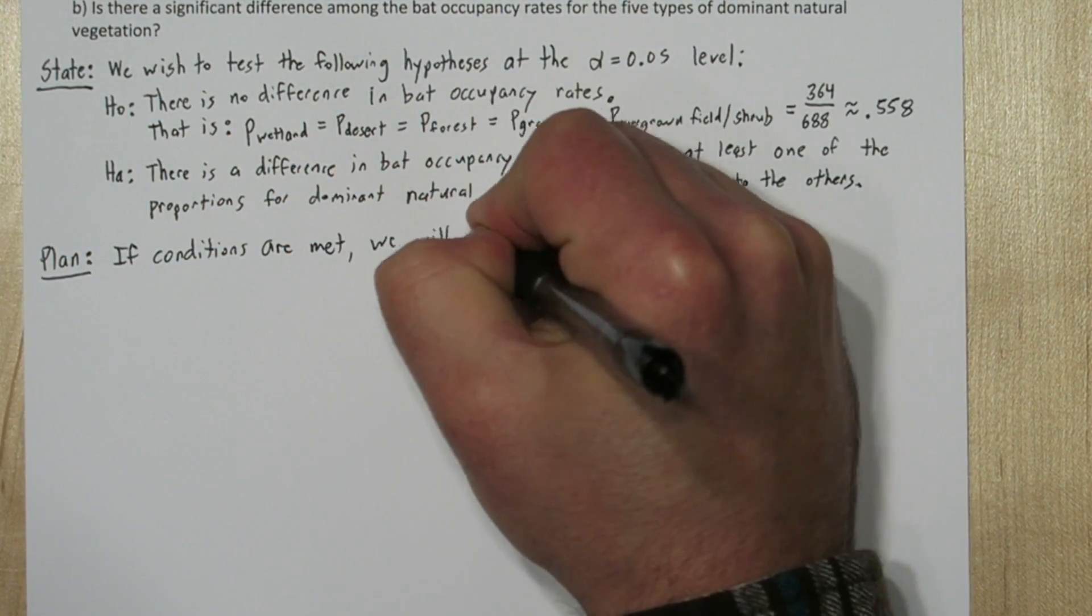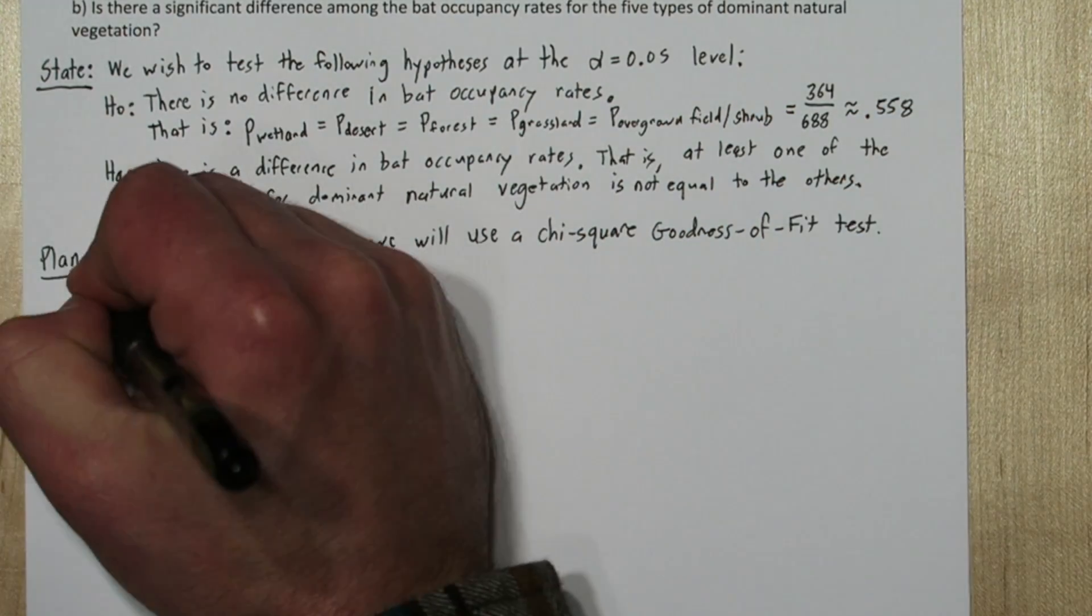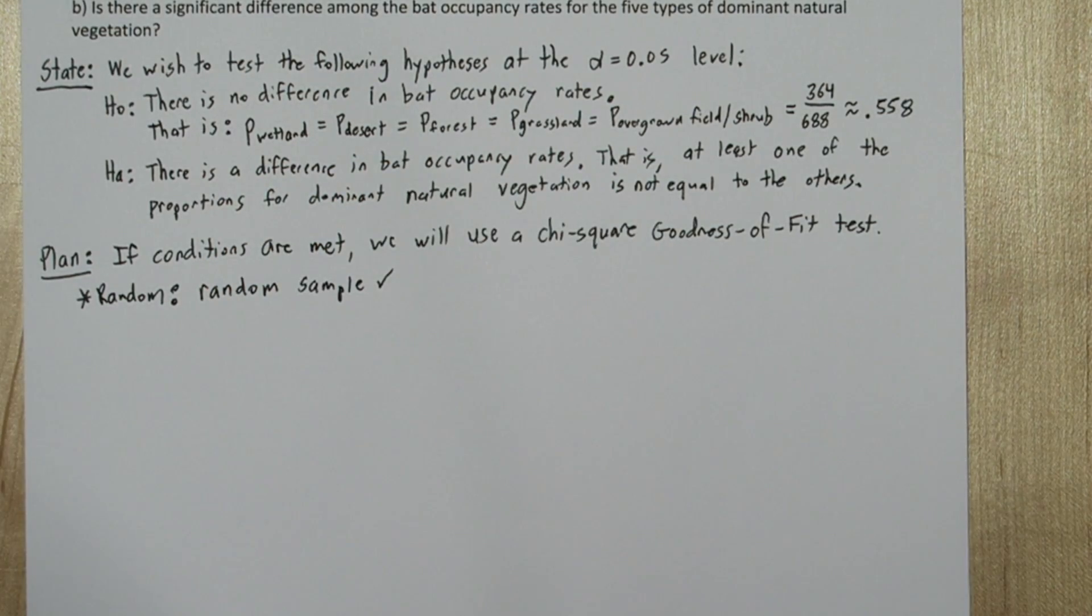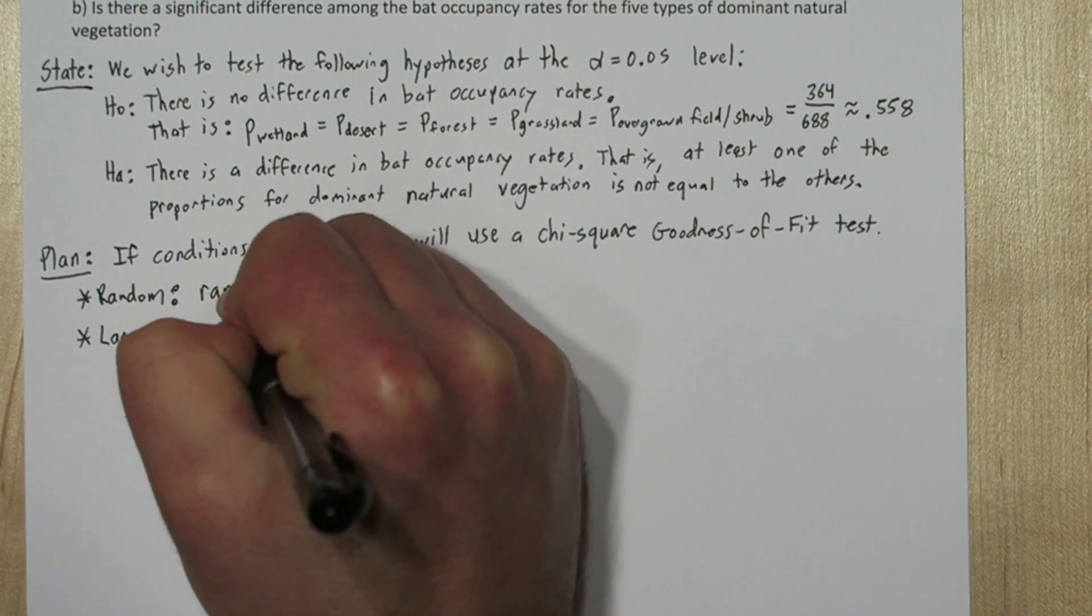So if conditions are met, we'll use a chi-square goodness of fit test. For the random condition, we're told to assume this is a random sample, so that's met. Next we need to make sure our sample is large enough. So we'll check the large sample size condition.